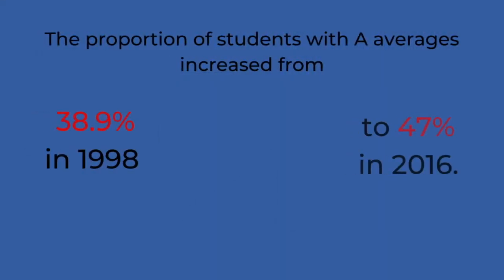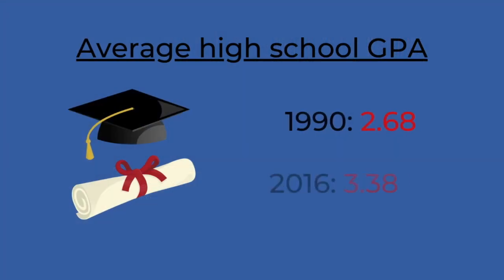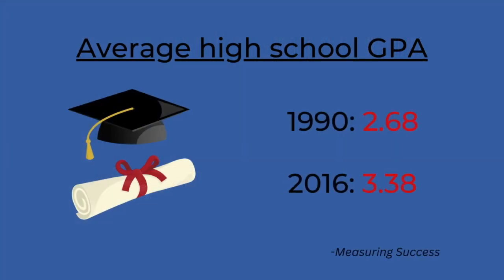The proportion of students with A averages increased from 38.9% of the graduating class of 1998 to 47% of the graduating class of 2016. According to the Department of Education, the average high school GPA was 2.68 in 1990 and by 2016 it had risen to 3.38. For all of these reasons, college admissions are not what they used to be, and academic quality once students get to college suffers as a consequence.